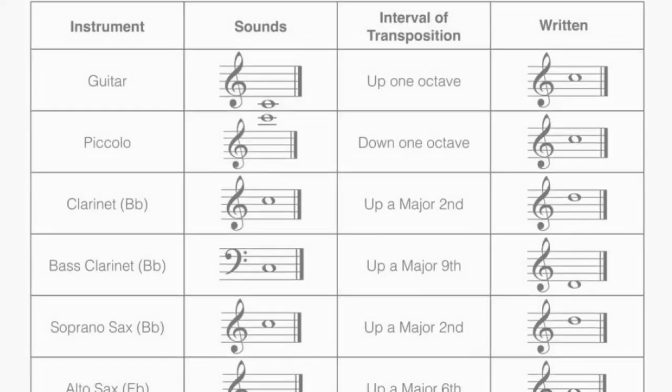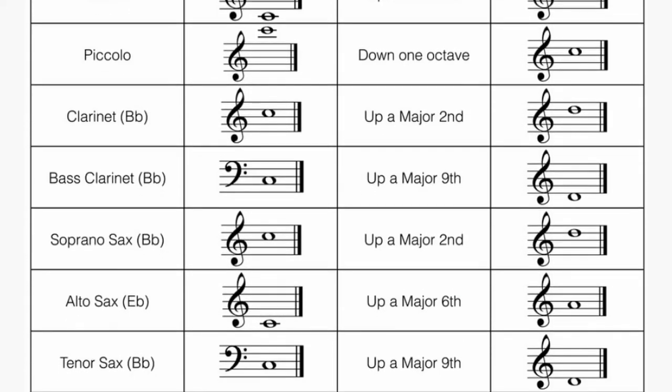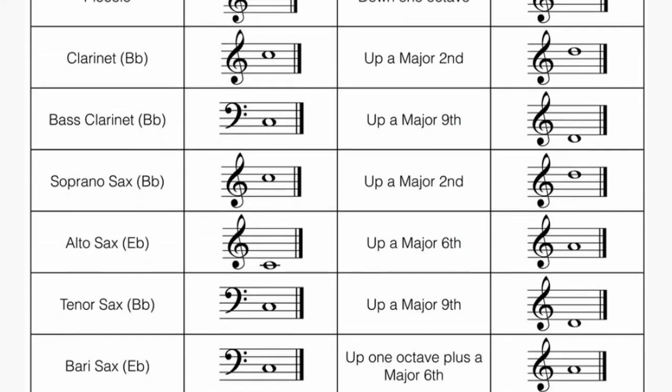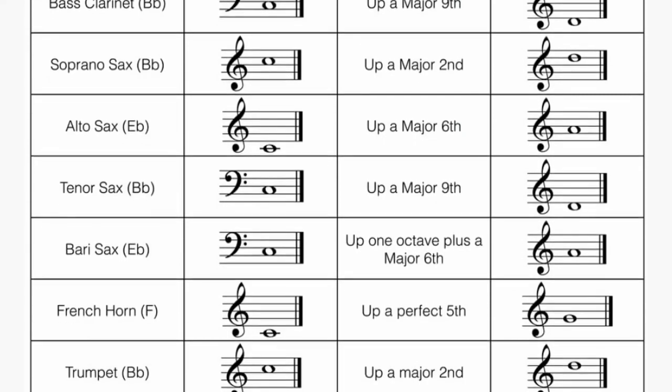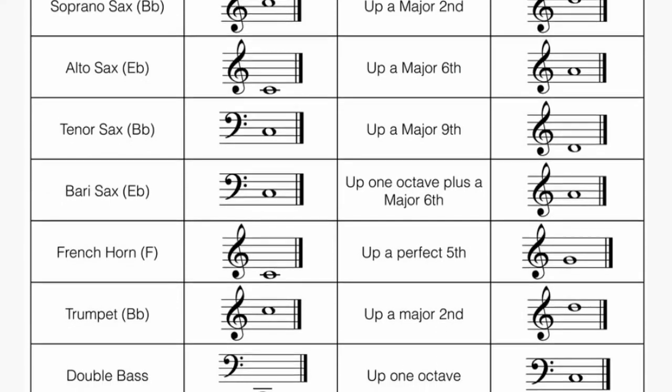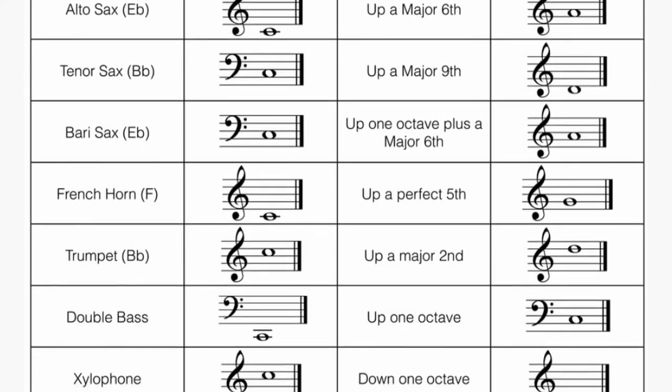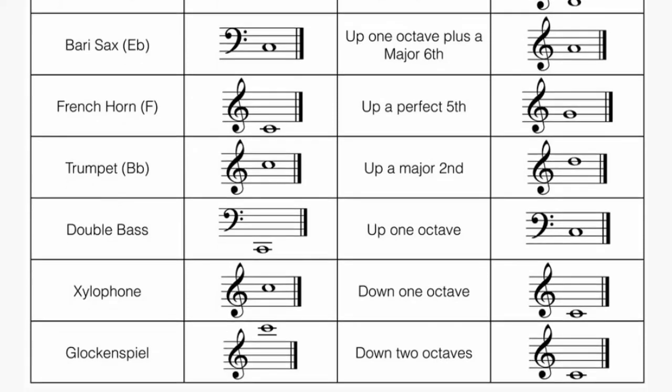One of the main reasons why we have transposing instruments is because it makes it easier for a player of one instrument to play the entire family of their instrument, as other instruments in the family may be played with the same or similar fingerings for the same written note, even though the resulting sounding pitch may differ due to transposition.